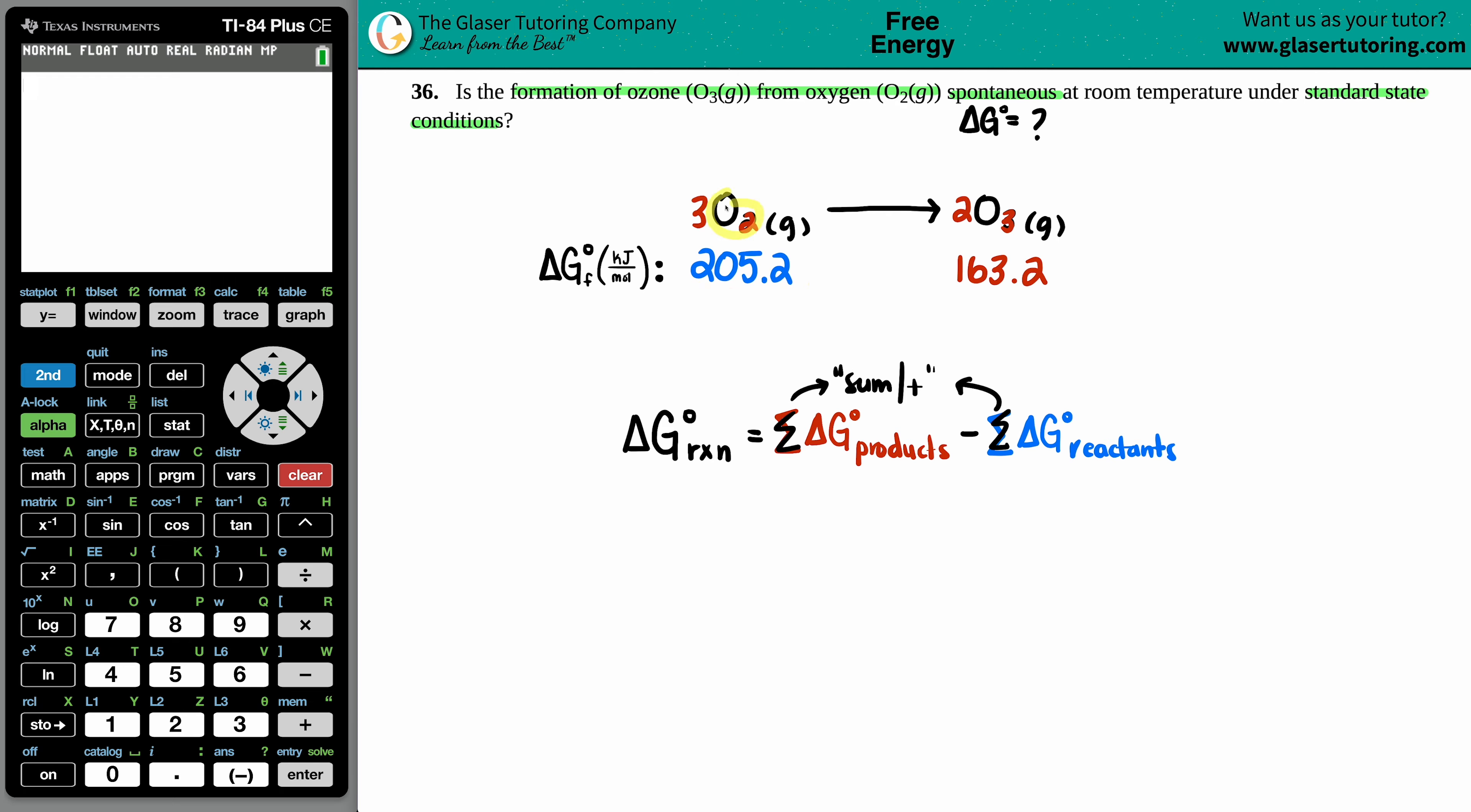These values are for only one of the substance. But for oxygen's case, I have three of them as my coefficient. And for the ozone, I have two. So whatever your coefficient is, that's the number that you're going to multiply by. So I have to multiply this one by three and I have to multiply this one by two.